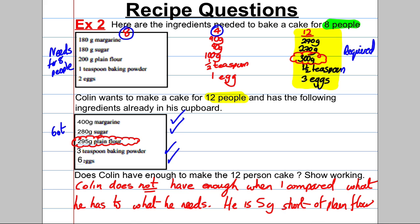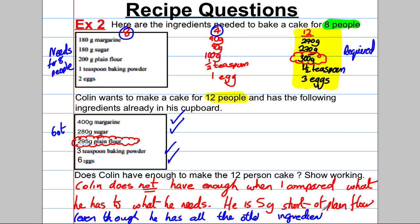He is five grams short of plain flour. You can also state in brackets that he has enough of all the other ingredients. Those are the two styles of questions that come up — that's about it for this style.